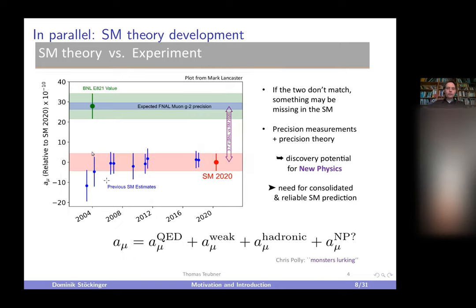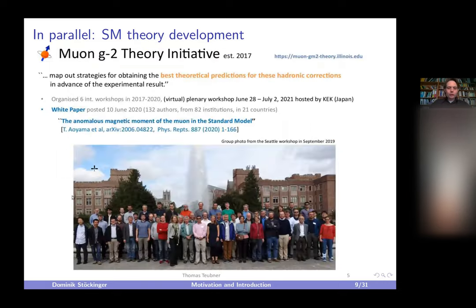It was also extremely important to improve the Standard Model precision. The Standard Model development was really stable over the past 20 years between Brookhaven and now. There is also a huge Standard Model theory community — the muon g-2 Theory Initiative — with more than 100 authors who signed the white paper that is the basis of this theory-versus-experiment comparison.